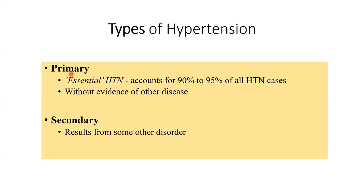When we say primary hypertension, we mean hypertension caused by a cardiovascular issue in origin. When we say secondary hypertension, we mean it did not originate in the circulation. For example, diabetics have hypertension — diabetes is an endocrinological problem, but it leads to hypertension.